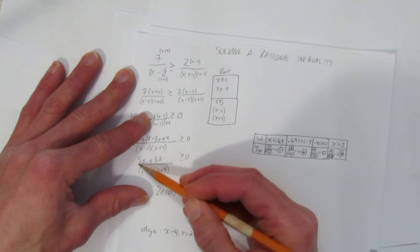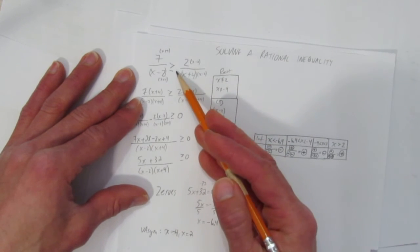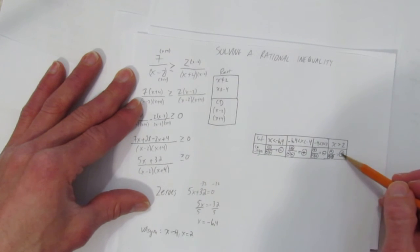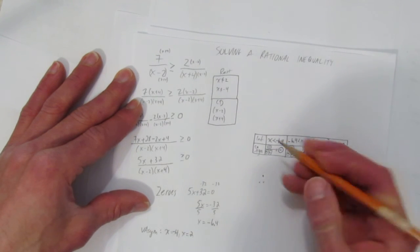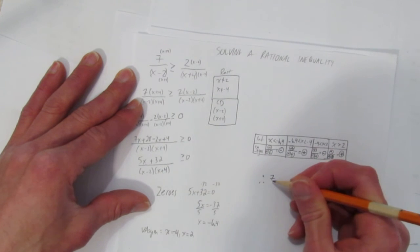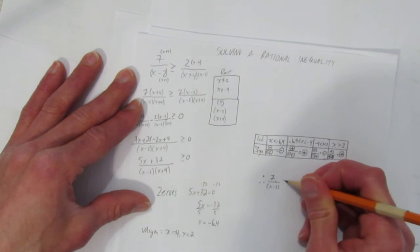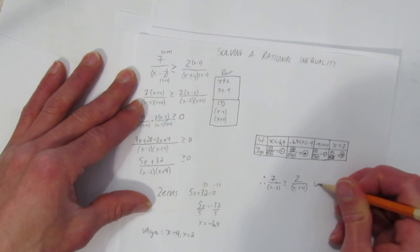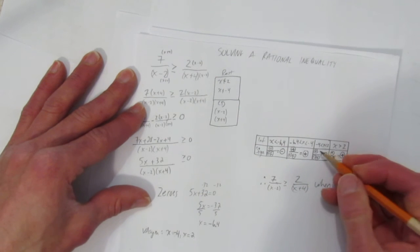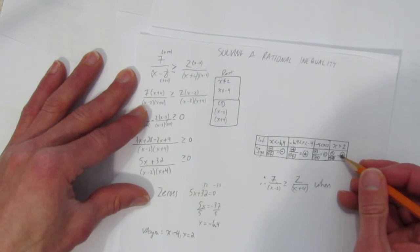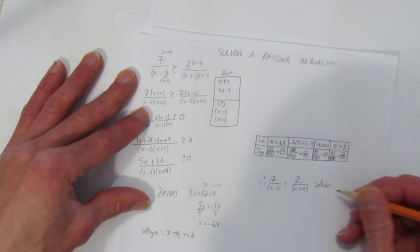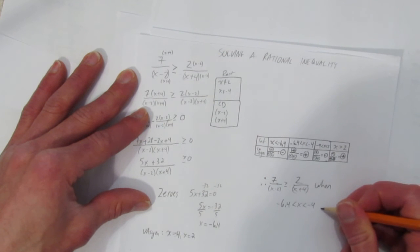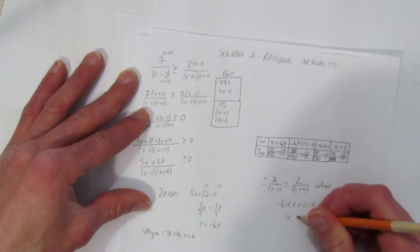Because we're trying to solve this, what we broke it down to, which is the original equation. Where is this thing bigger than 0? It's bigger than 0 wherever it's positive. Therefore, this inequality is true. 7 over x minus 2 is greater than 2 over x plus 4, when, or for whenever it's positive, whenever it's greater than 0. So it's greater than 0, positive here and positive here, when negative 6.4 is less than x, which is less than negative 4, and when x is greater than 2.